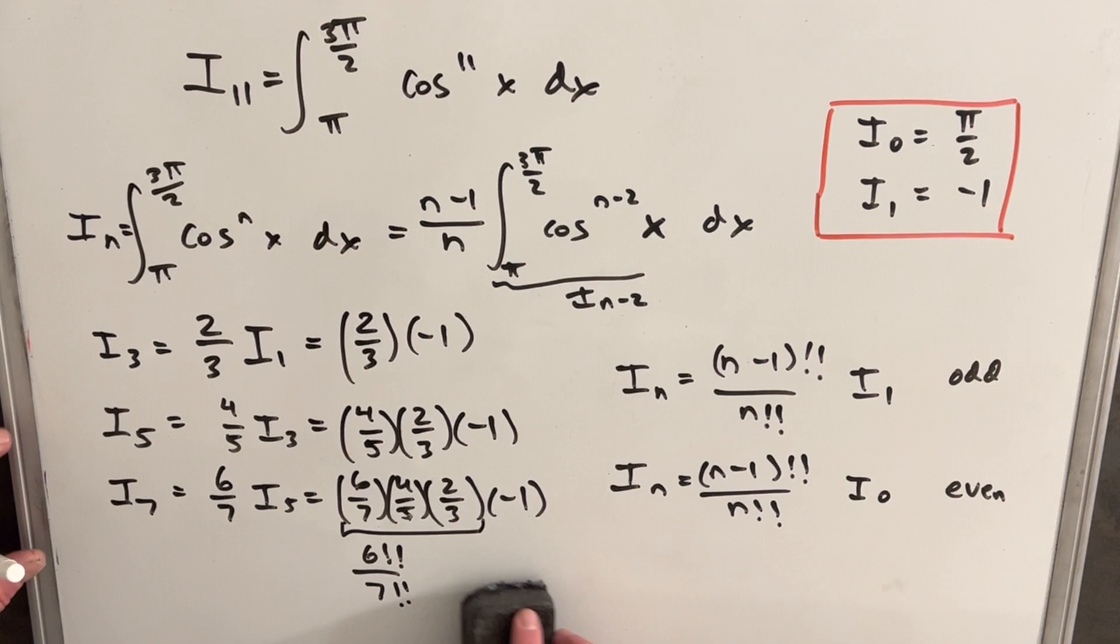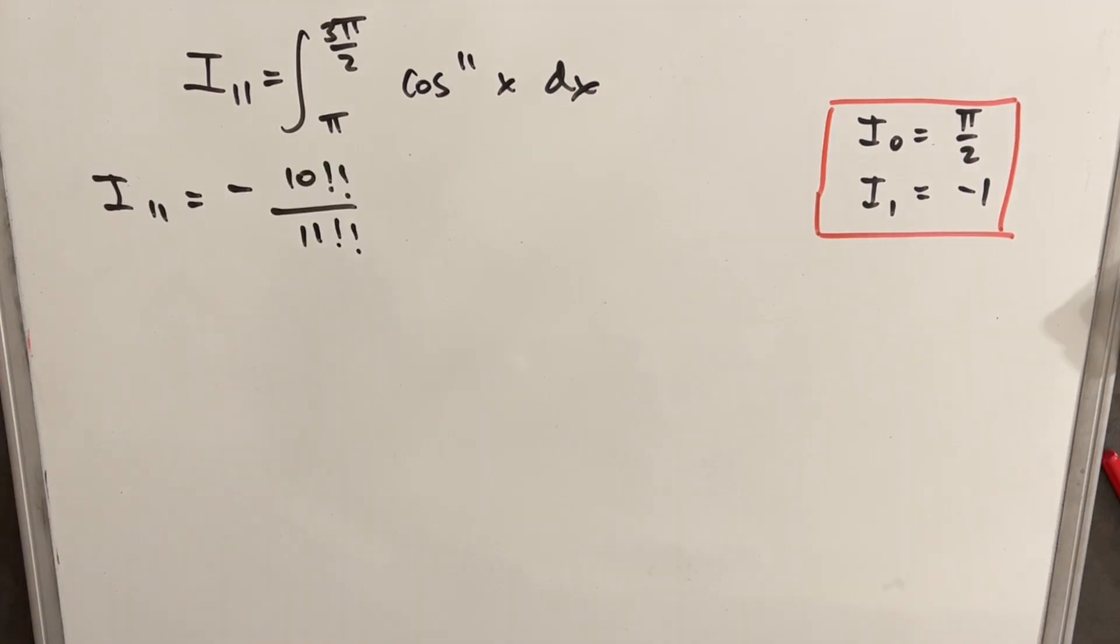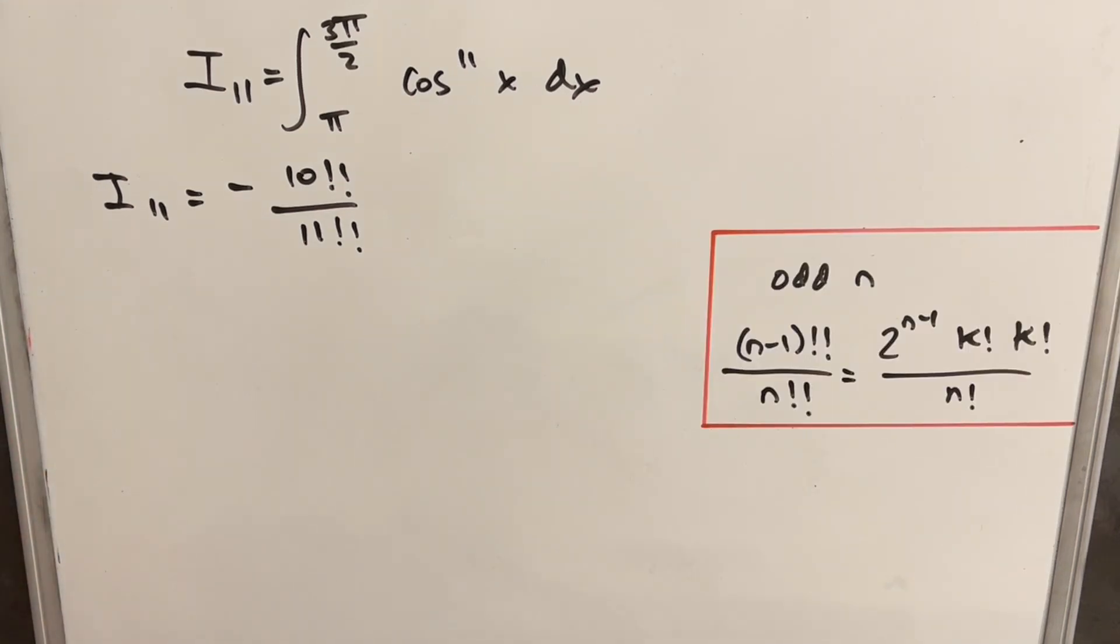So then using that, let's just find our I sub 11, that's the value we really want, right? That's our goal. So for I_11, we're going to have 10 double factorial over 11 double factorial, and our I_1 is negative 1. Okay, so now we have, this is actually our answer, negative 10 double factorial over 11 double factorial. But you may say, I don't really like having double factorial as my answer, I want to see this a little different. So let's look at a different way to express this. In one of those previous double factorial videos, I defined, I derived this formula here on the right. So again, there'll be a link in the description to that.